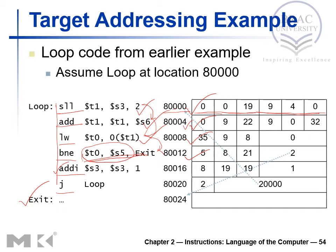If the branch is taken, the pointer jumps to the exit label, as shown by the arrow. If the branch is not taken, execution continues sequentially to ADDI, and then to the jump instruction. The jump instruction loops back to an earlier point in memory — the arrow shows the program returning to loop. This illustrates how a program executes branching and looping.